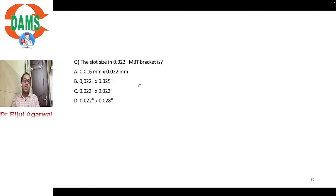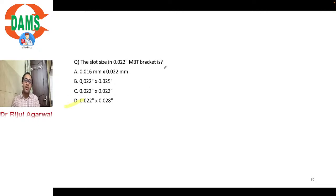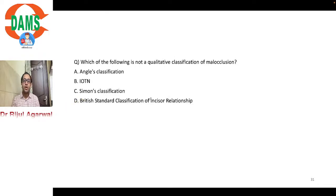The slot size in 0.022-inch MBT bracket is 0.022 x 0.028 inch. They can also ask the maximum wire dimension a 0.022-inch bracket can accommodate — the answer is 0.022 x 0.028 inch.